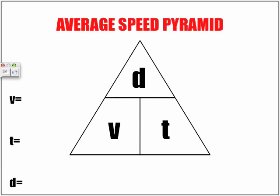So if we're trying to find average speed, here is the average speed pyramid. Please make sure that you are able to remember the order that these letters appear: D, V, and T. Please be able to draw the pyramid. We looked at average speed — V_av is equal to delta D over delta T — so we can ignore the V_av and the deltas here.